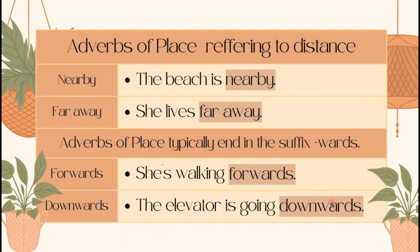For example: she's walking forwards, and the elevator is going downwards. Our object in the first sentence is 'she,' and our adverb of place is 'forwards.' The object in the second sentence is 'the elevator,' and our adverb of place is 'downwards,' which refers to direction. Now let's continue to prepositions.